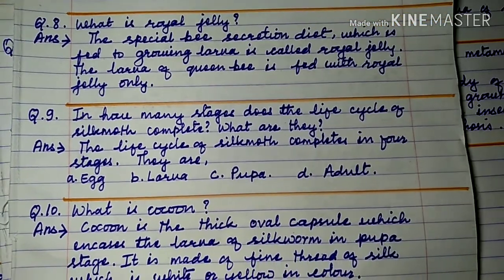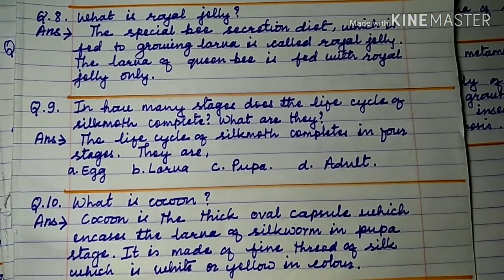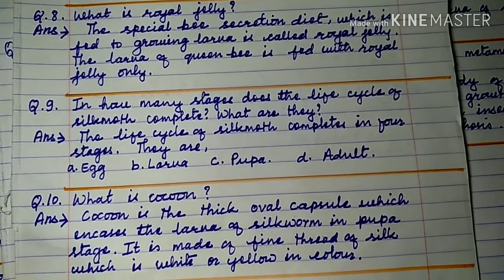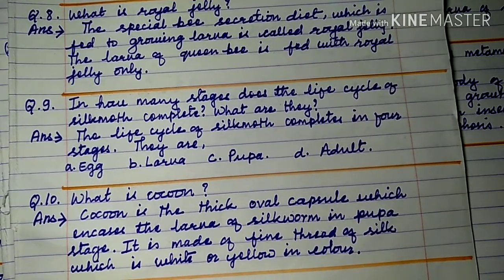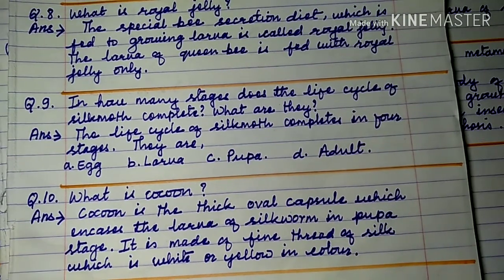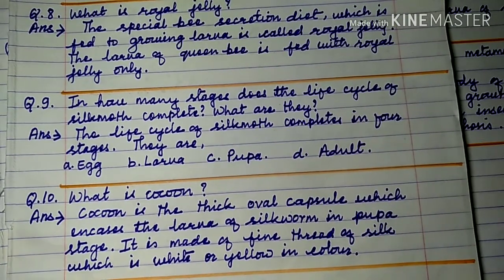Question number 10: What is a cocoon? A cocoon is the thick oval capsule which encases the larva of silkworm. In the pupal stage it is made of fine thread of silk, which is white or yellow in color.